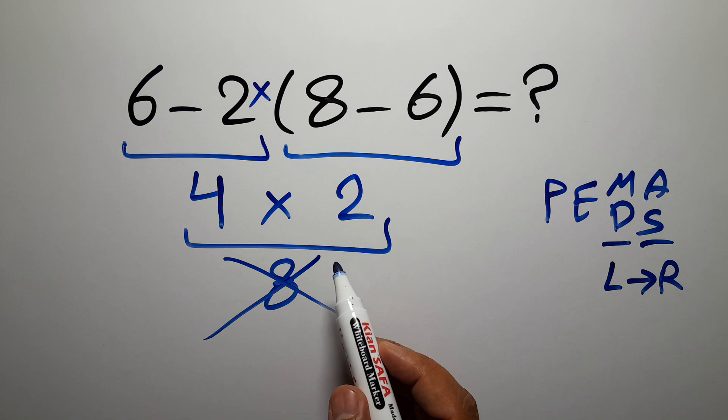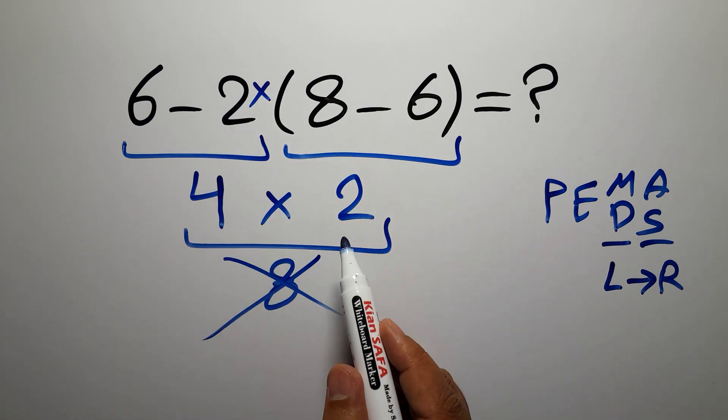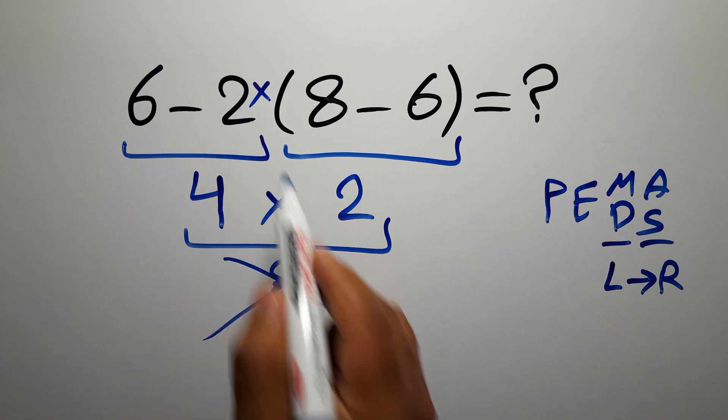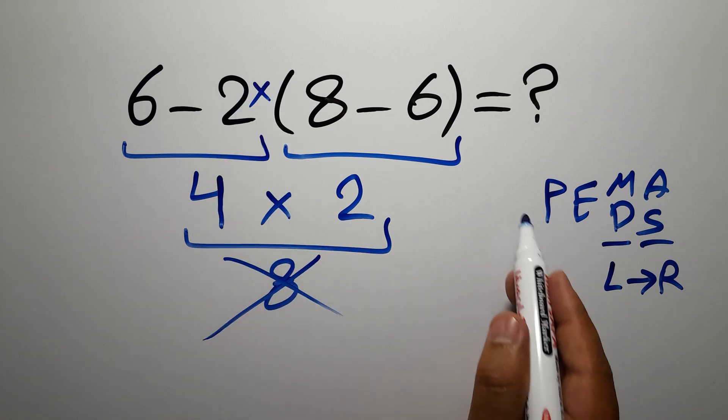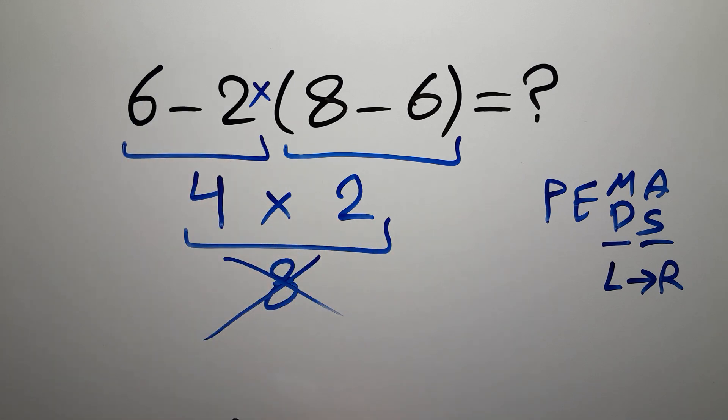Here we have a multiplication because in mathematics when a number is placed next to parentheses it means multiplication, and we usually don't write the multiplication sign for brevity. According to PEMDAS, first we have to do this parentheses, not this subtraction.